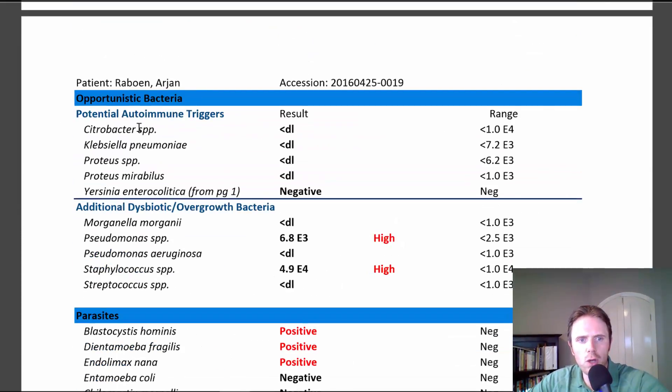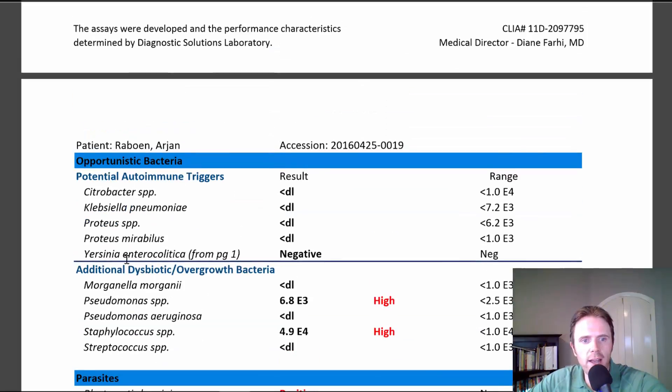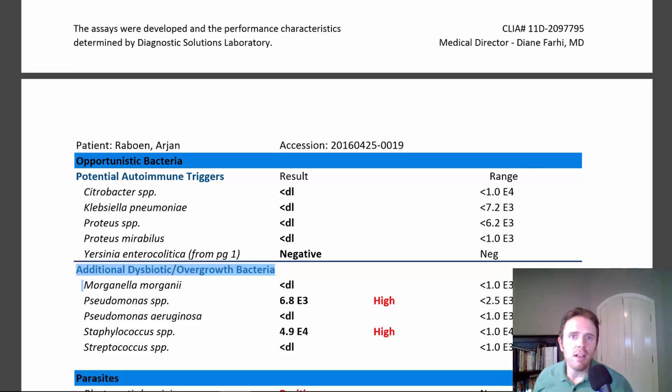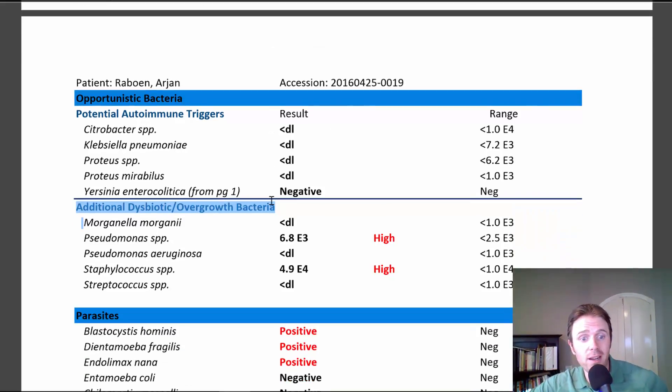Off the bat, looking at potential autoimmune bacteria, we look pretty clean, but look up here. We already have some dysbiotic flora showing up. We have Pseudomonas species and Staphylococcus species. So now off the bat, that theory on page one regarding the dysbiosis, we already know is present because we can see it here based on the Pseudomonas and the Staphylococcus.